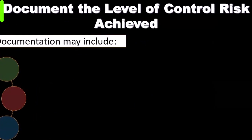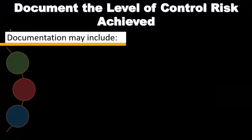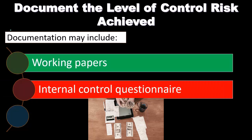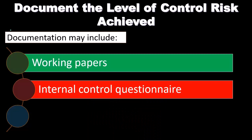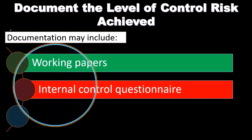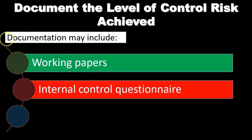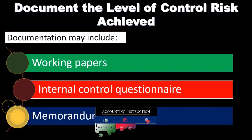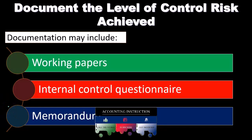Next we're going to document the level of control risk achieved. Documentation may include working papers — we put together our working papers as we do our testing as documentation, piling up the evidence. The controls are going to be a part of our evidence, not just the substantive testing. The controls are part of our evidence to verify and support our opinion. We'll also have internal control questionnaires and memorandum type formats — a more narrative type format — supporting our documentation as well.